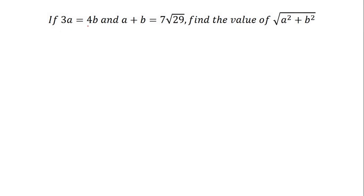If 3a is equal to 4b and a plus b is equal to 7 root 29, find the value of square root of a squared plus b squared. Let us try to solve this problem.